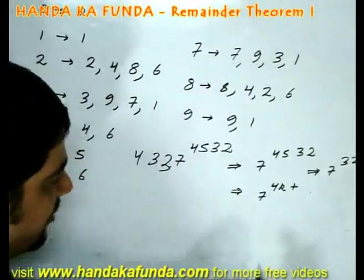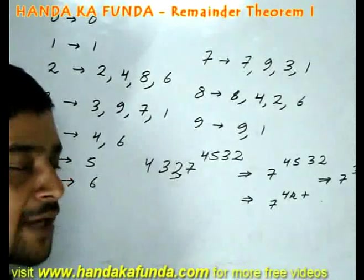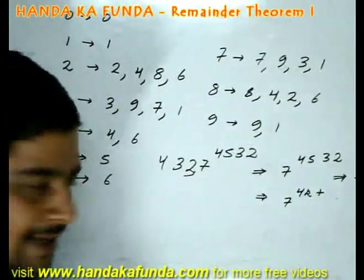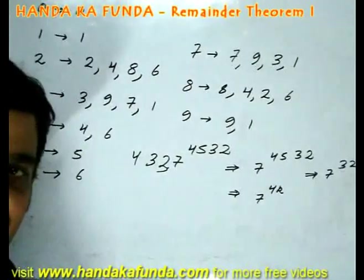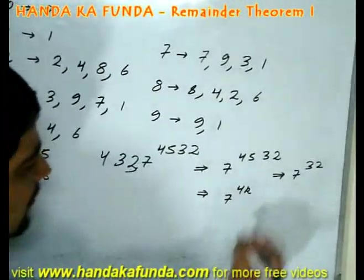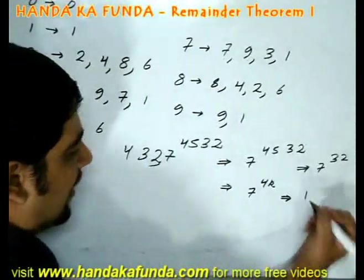7 to the power 32. Now can you tell me what it is in 7 to the power of 4k plus what? Nothing. It is simply 7 to the power of 4k. Why? Because 32 is perfectly divisible by 4, which means my answer will be 1.